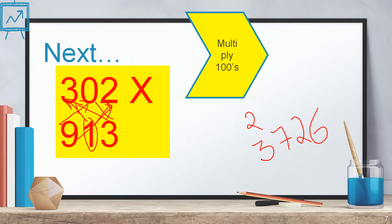Next step is what? Multiply 100s. Right? 9 3s are 27. You will be getting the answers 6, 2, 7, 5, 7 and 2. That is 2,75,726.